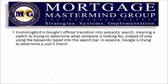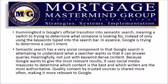Getting your social profiles search friendly, you first have to have a little understanding of Hummingbird. Hummingbird is Google's official transition into semantic search, meaning a switch to trying to determine what someone is looking for instead of only using the keywords typed into the search bar. In essence, Google is trying to determine a user's intent. Semantic search has a very social component in that Google search is attempting to understand what a searcher wants so that it can answer those queries meaningfully, not just with keyword-dense content.